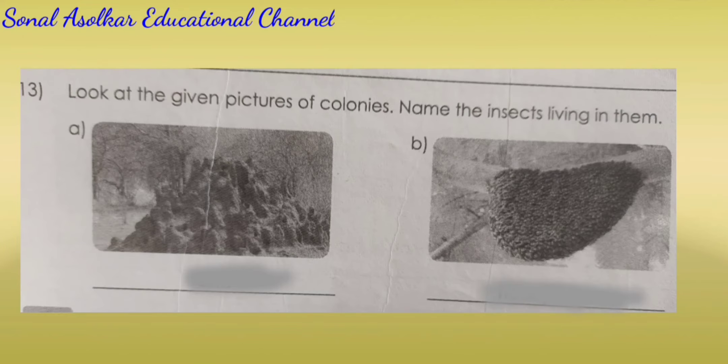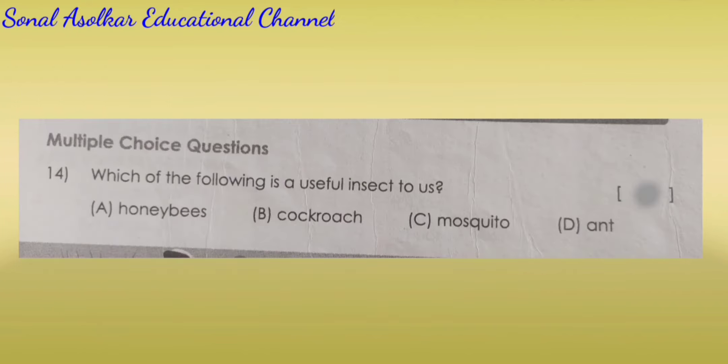Question number 13. Look at the given pictures of colonies. Name the insects living in them. Ants. Honeybees. Multiple choice question. Which of the following is a useful insect to us? Option A. Honeybees. Option B. Cockroach. Option C. Mosquito. Option D. Ant. The correct answer is option A. Honeybees.